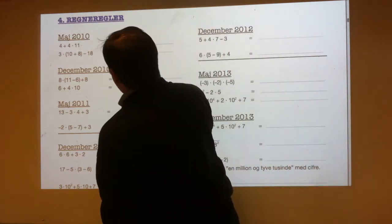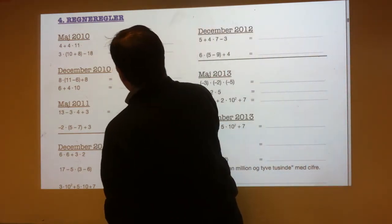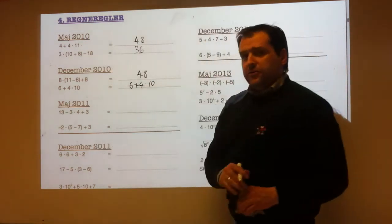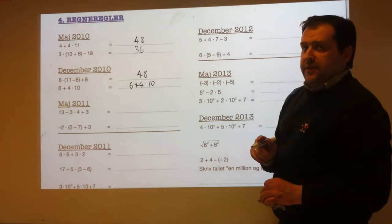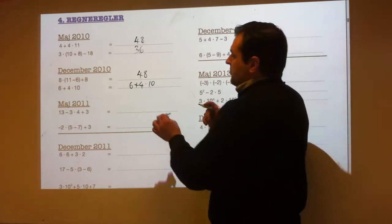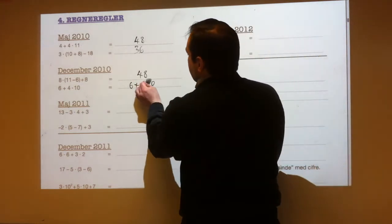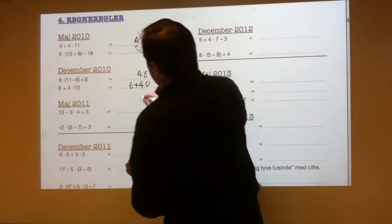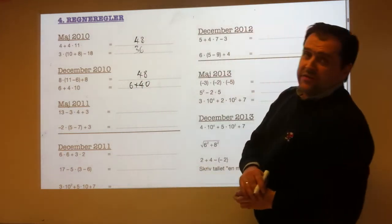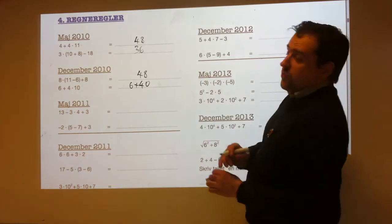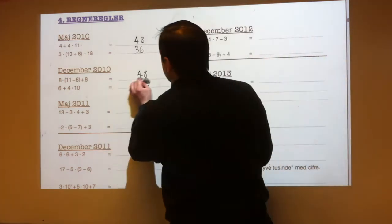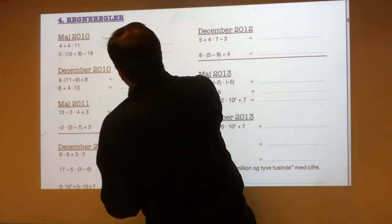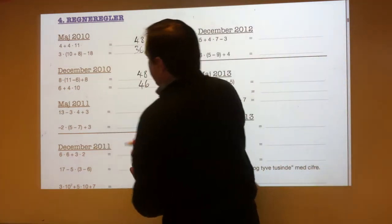6 plus 4 times 10. Do the 4 times 10 first. 4 times 10 is 40. So it's 6 plus 40, which is 46.